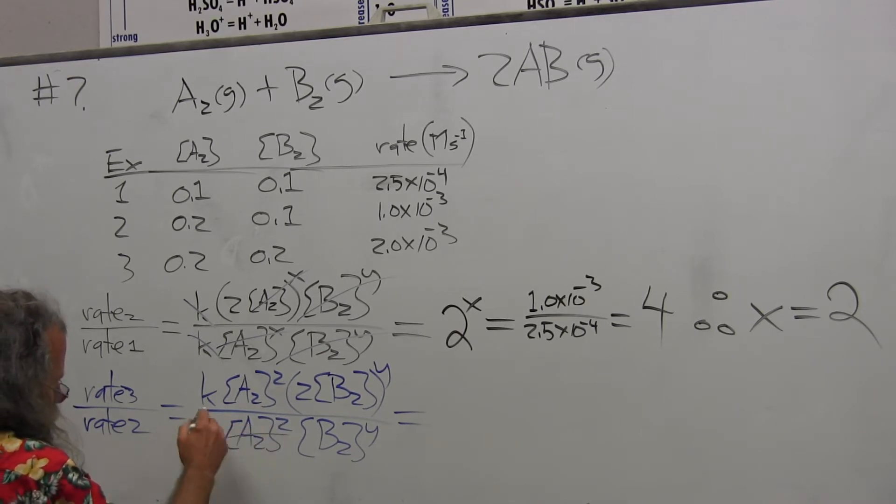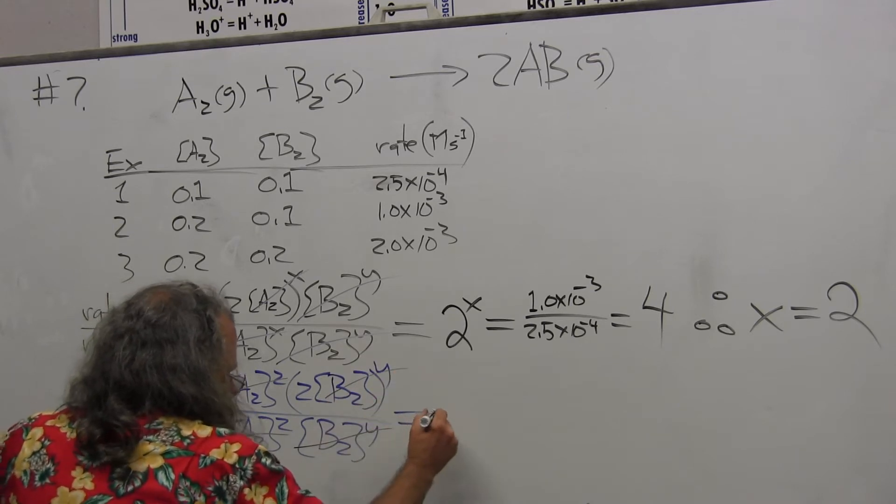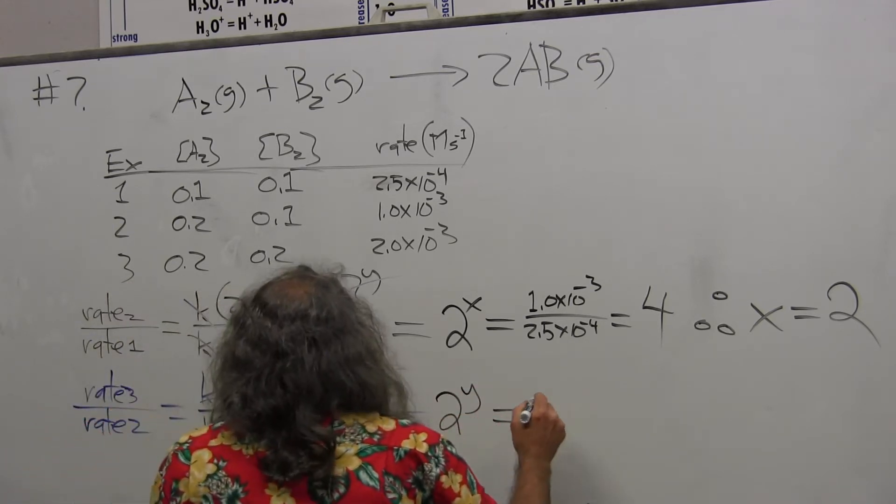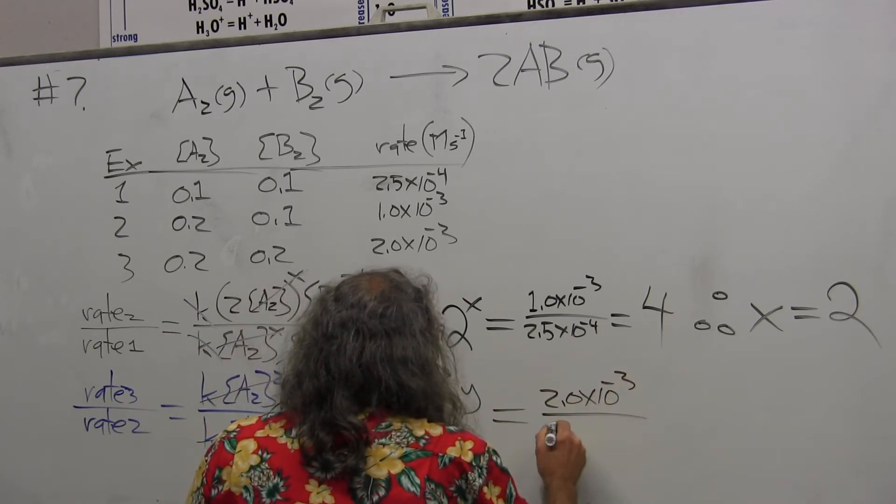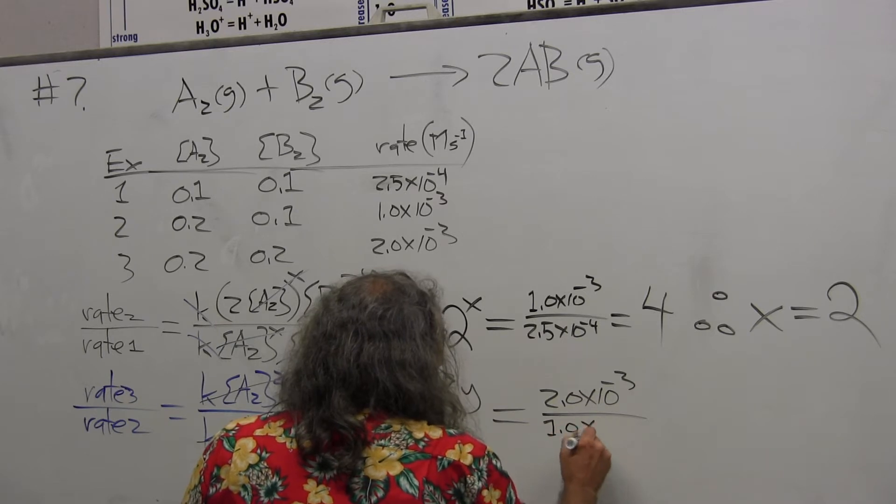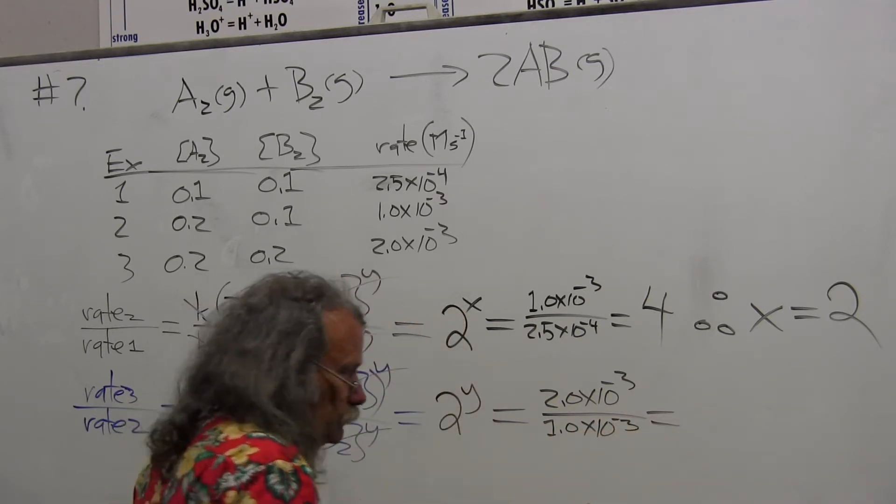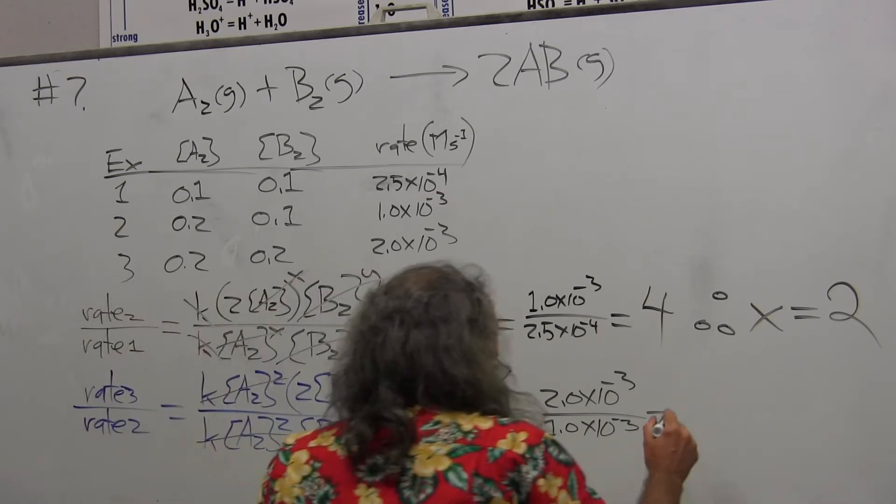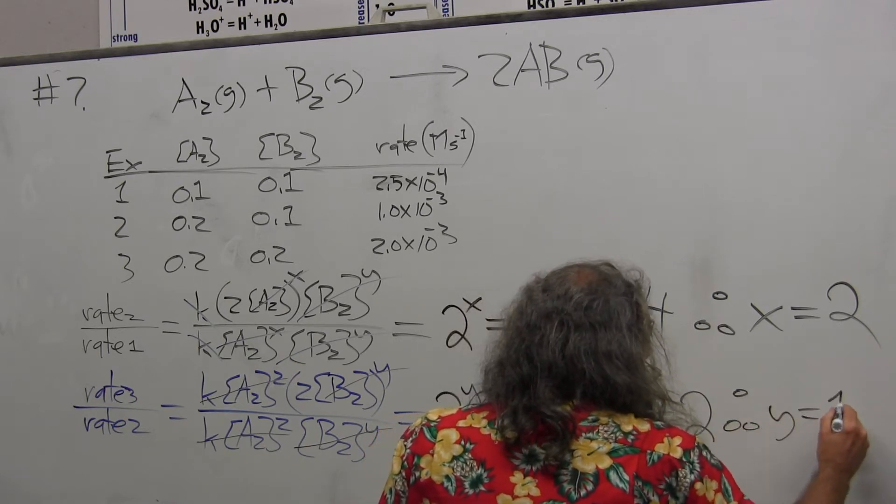Now you'll see how this one's obvious. This is going to drop out, this is going to drop out, and that's going to be equal to 2 to the Y, and it's equal to 2.0 times 10 to the minus 3 divided by 1.0 times 10 to the minus 3, and that's equal to 2. Therefore, Y is equal to 1.